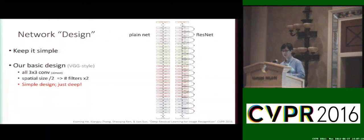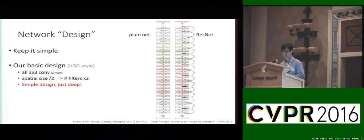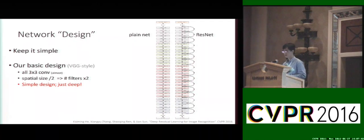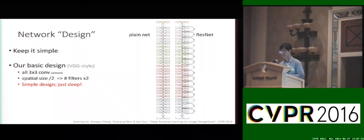With this design in mind, we design our network following the philosophy of VGG networks, keeping it very simple. In our baseline models, all convolutional layers are 3×3. Each time we reduce the spatial size we increase the number of filters by two, so the time complexity of each layer is roughly the same. We construct a plain network this way and then simply turn it into a ResNet by adding identity shortcut connections.